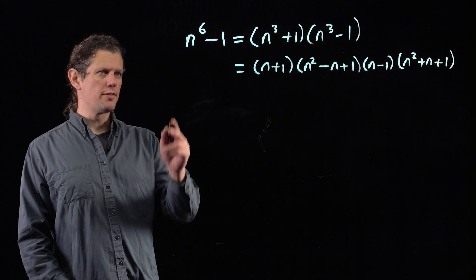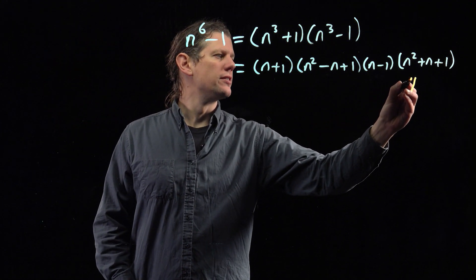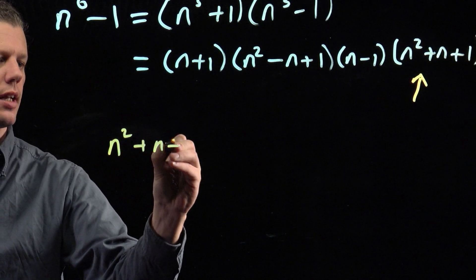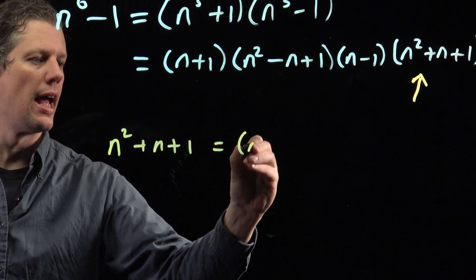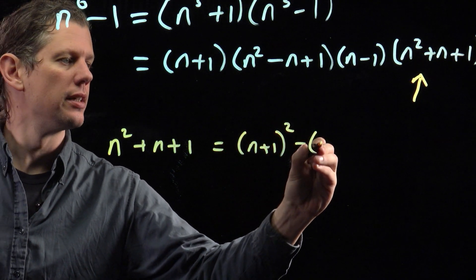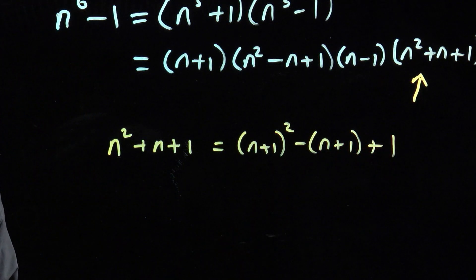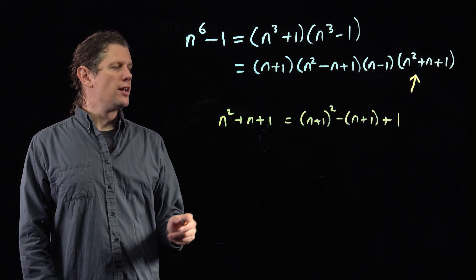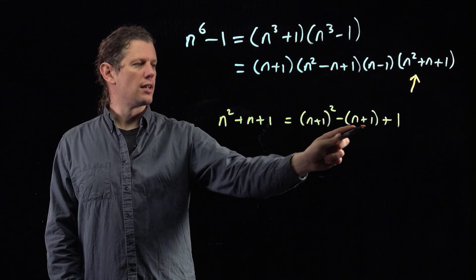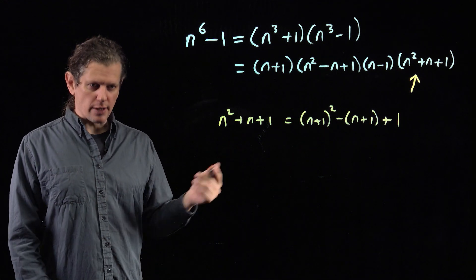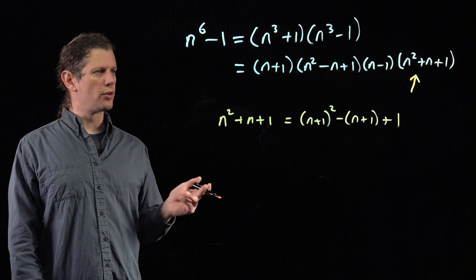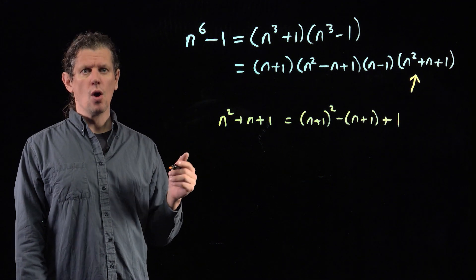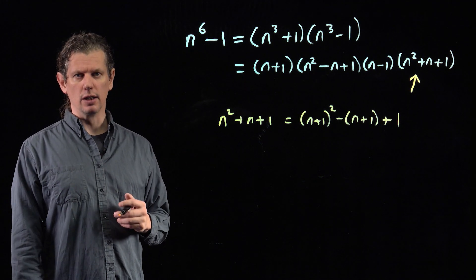Lastly, what if p divides n⁶ - 1 because it divides (n² + n + 1)? It turns out that n² + n + 1 = (n + 1)² - (n + 1) + 1. So if p divides n² + n + 1, then it also divides that factor for n + 1. The question asks for it to work for n + 1 or n + 2, and we've done that. In all four cases, either it can't be the minimal n, or n + 1 or n + 2 also work. So we're done.